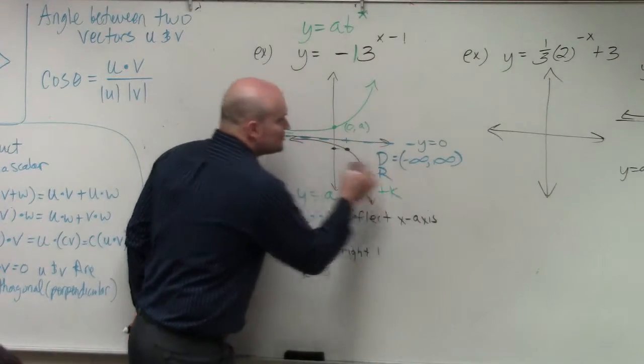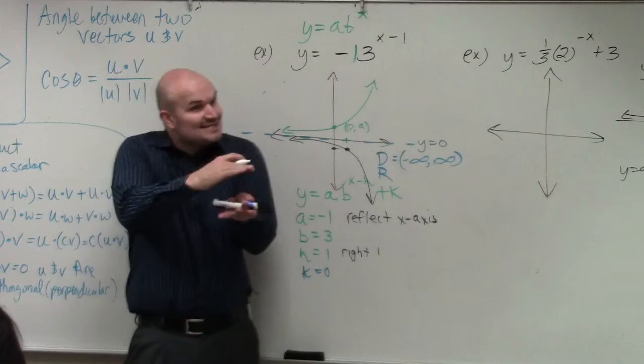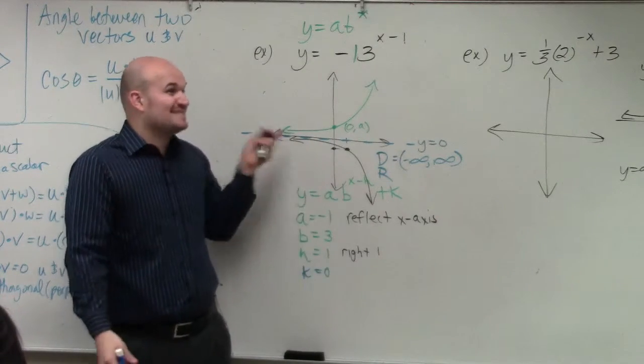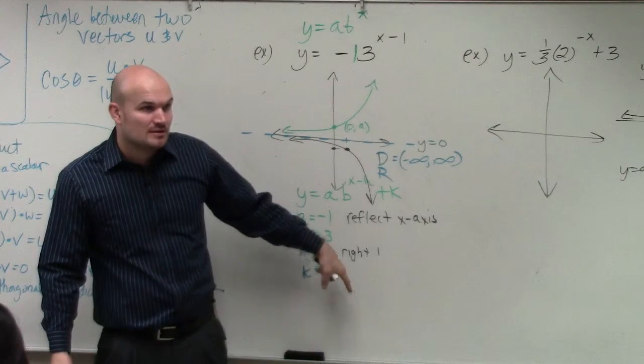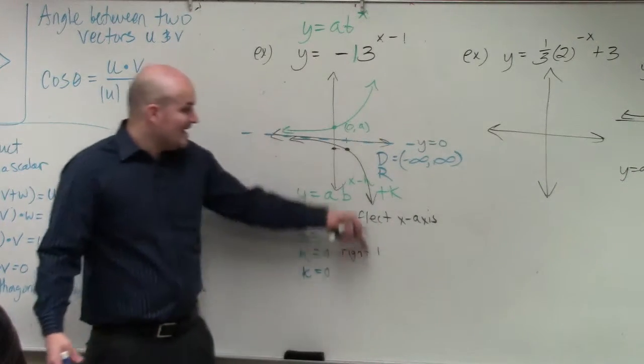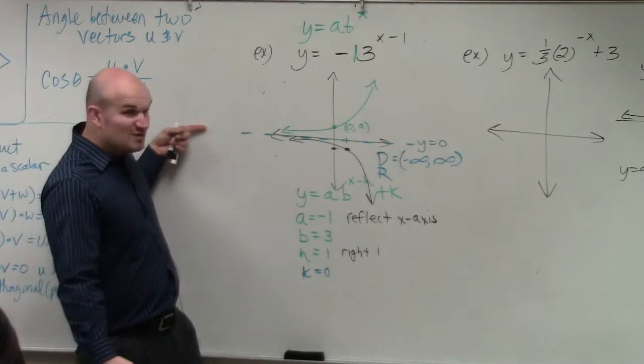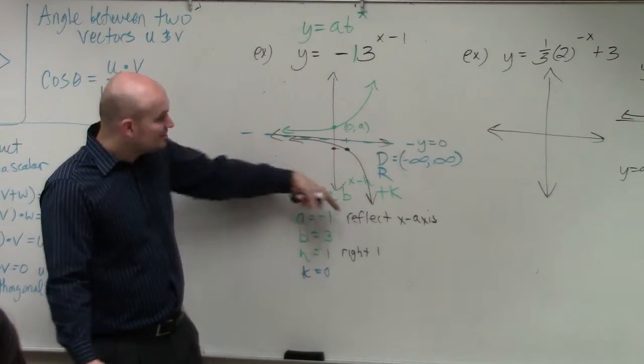And then we get the range is going to be how low does this graph go to how high does it go? Well, remember the asymptote is where this graph approaches. It's not going to cross back over this asymptote. So how low does this graph go? How low down is this graph going to go? Negative infinity. And how high is it going to go? It doesn't cross this asymptote. It's approaching 0.